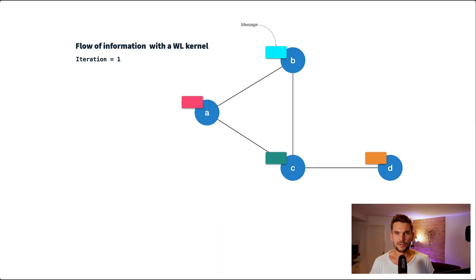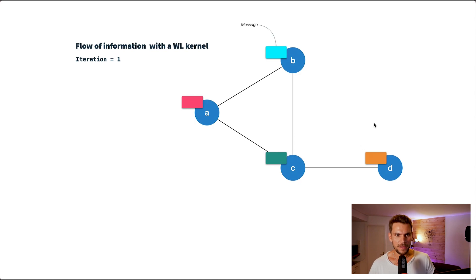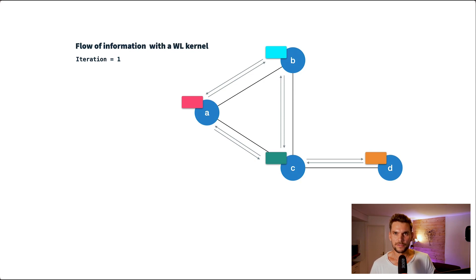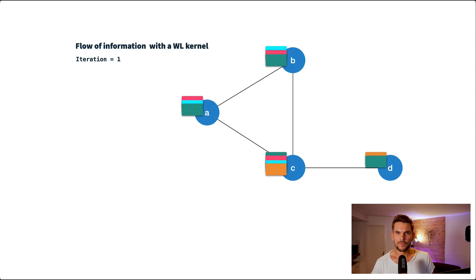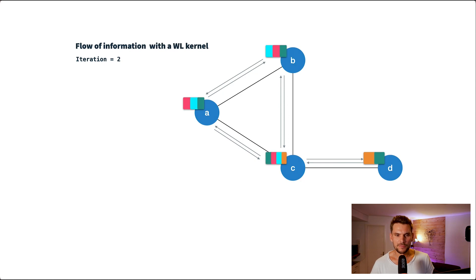HashGNN is derived from an approach called WLKNN, which stands for Weisfeiler-Lehman Kernel Neural Networks — basically a message passing neural network. The WLKNN runs in T iterations. In every iteration we start with an initial node vector, pass these message vectors along the edges so that all connected neighbors receive the message from each node, and then each node combines its initial vector with all the neighboring vectors it has received over the edges.